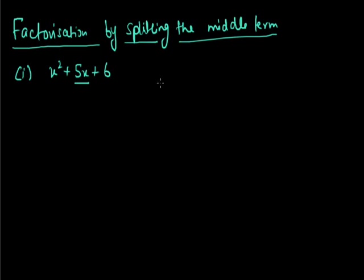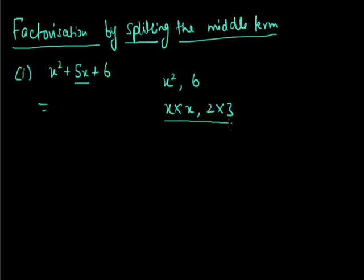The first term here is x² and the last term is 6. The factors of these two terms are x×x and 2×3. We need to combine these factors such that their addition gives the middle term 5x, and their multiplication gives the product of the first and last terms, which is 6x².